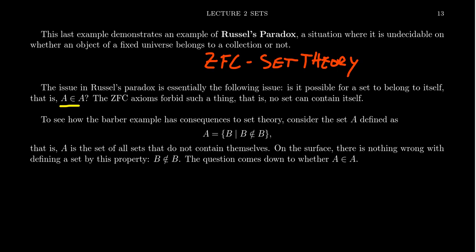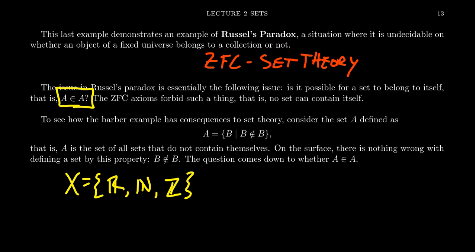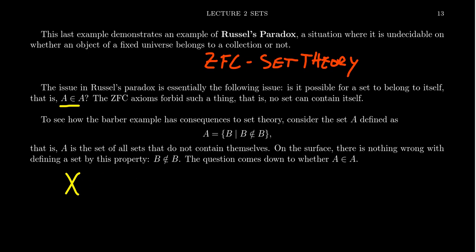For example, we could have a set whose three elements are the set of real numbers, the set of natural numbers, and the set of integers — something like the set of all number systems I like to do math problems with. So the elements of a set themselves could be sets, and that's not a controversy. The question comes down to: since sets can be elements of sets, can a set be an element of itself? And fundamentally, that's where Russell's Paradox comes from. The ZFC axioms of set theory forbid this — you cannot have a set which is an element of itself. That resolves Russell's Paradox in ZFC set theory.